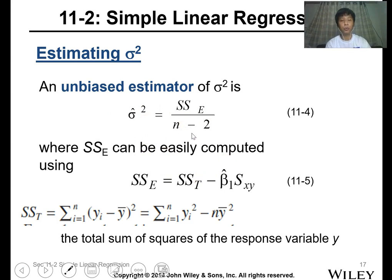This is the unbiased estimator. SSE can be easily computed using this formula: SST minus beta 1 hat times S_xy. SST is just the sum of the square of your y value minus your mean value for y. This is the total sum of squares of the response variable y.